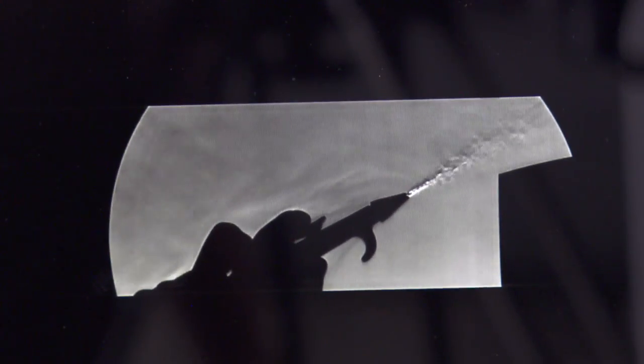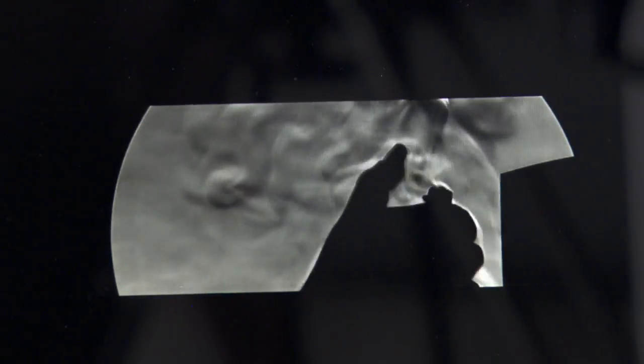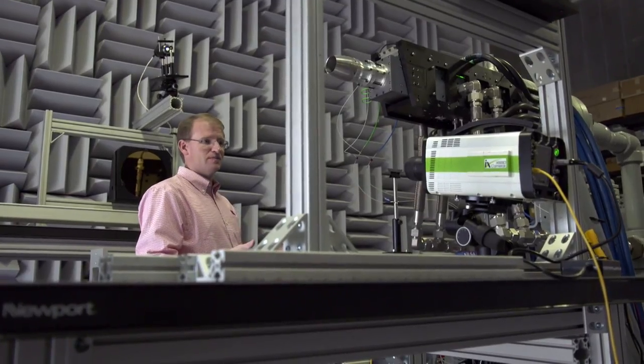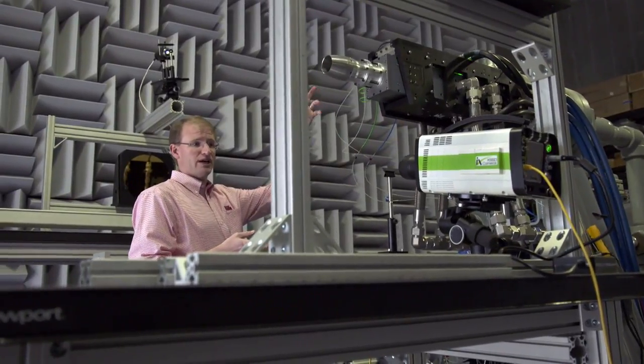They'll use Schlieren imaging to compare their modified nozzle with a standard baseline one. Schlieren is a German word that just means streak, so you see a streak in the image, a dark region or a light region. This is our Schlieren system, so it's set up to let us image the sound waves and the shock waves in the jet.